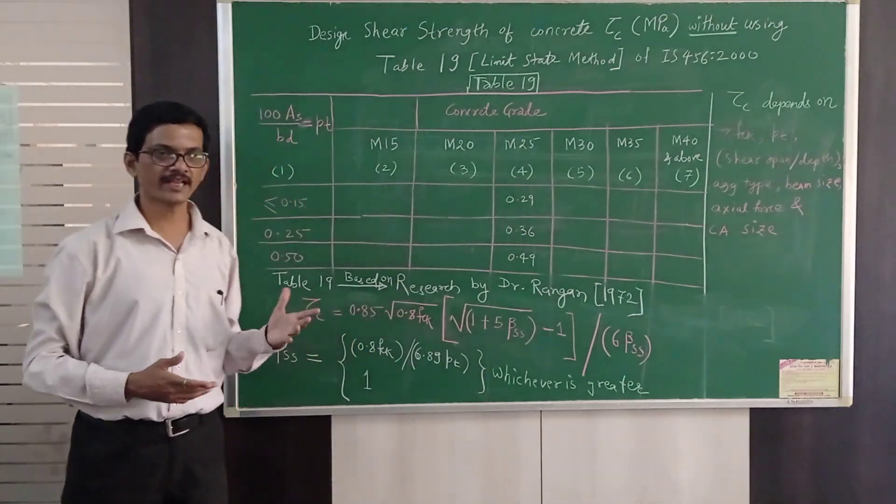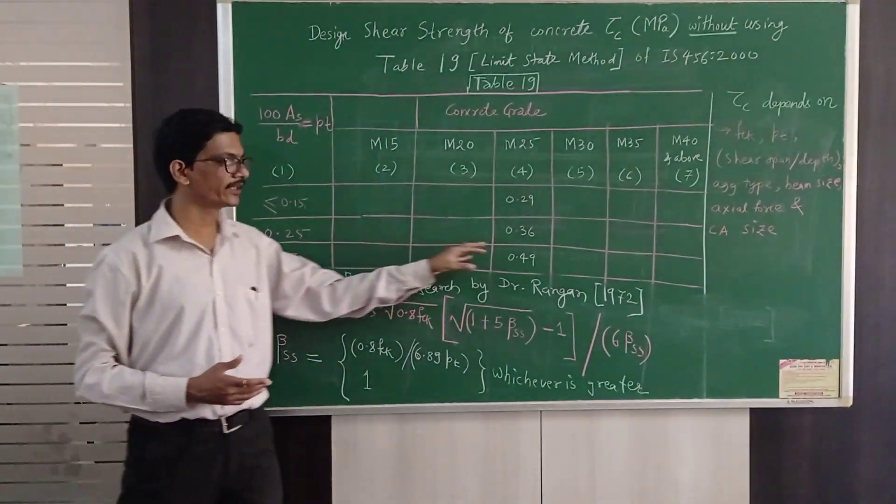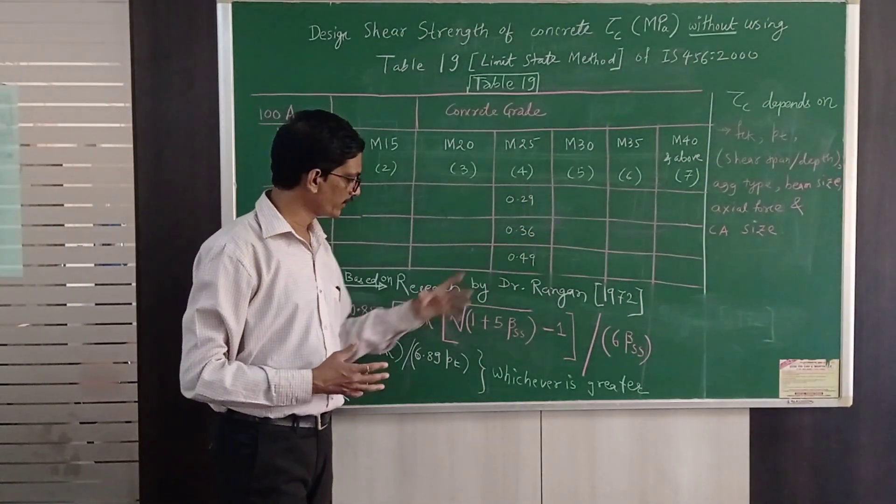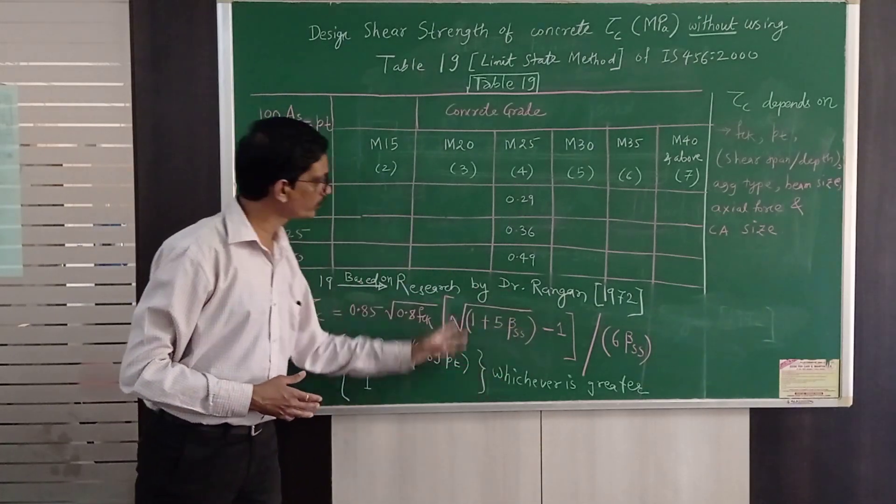But most of the times it lies between two levels like 0.32, 0.33 and then we have to interpolate. So that is what I wanted to convey that this is the reason how this table was formulated.